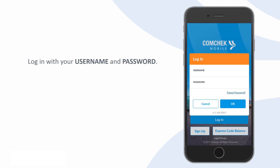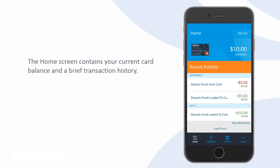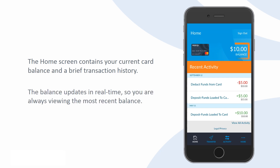Log in to the mobile app with your username and password. Once logged in, the home screen contains your current ComData card balance and a brief transaction history. The card balance updates in real time so you can be sure you're viewing the most up-to-date balance.